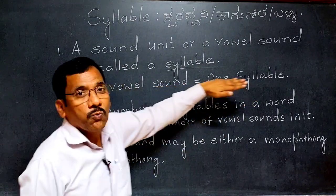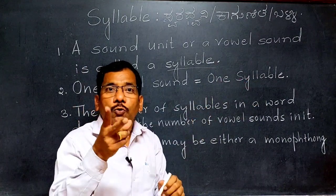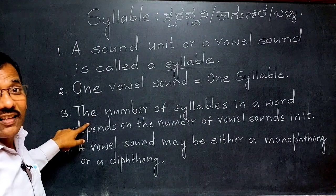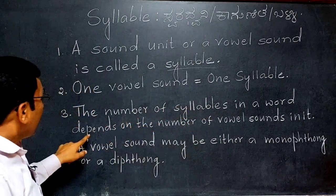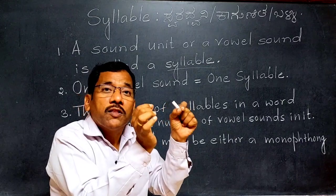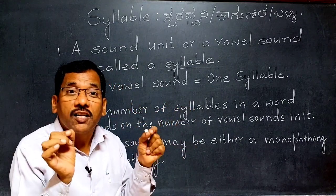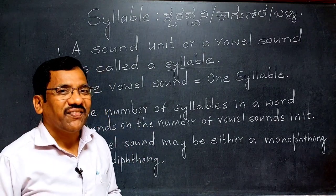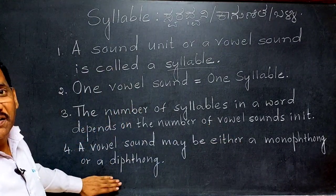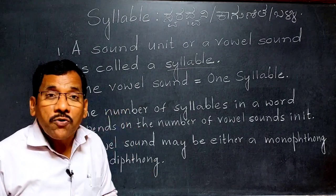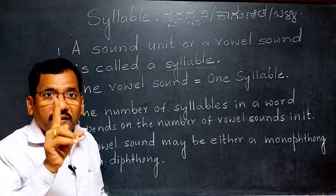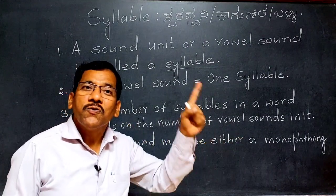One vowel sound equals one syllable. In a word, the number of syllables depends on the number of vowel sounds in it. A vowel sound may be either a monophthong or a diphthong. One monophthong is equal to one syllable, and one diphthong is equal to one syllable.